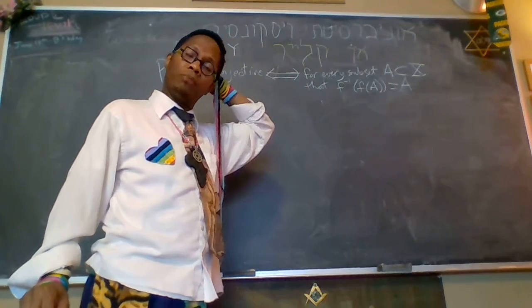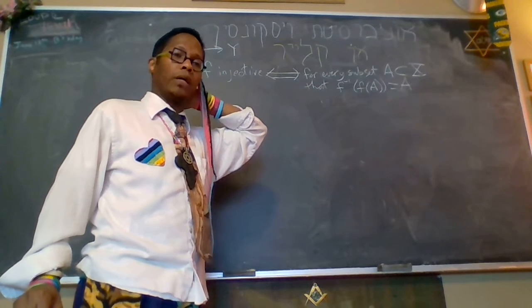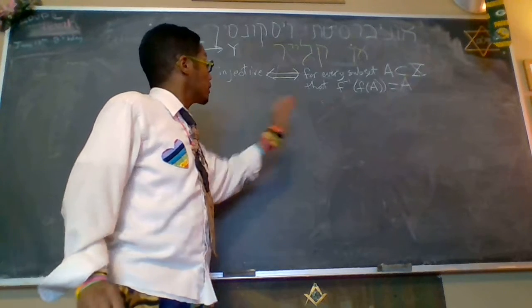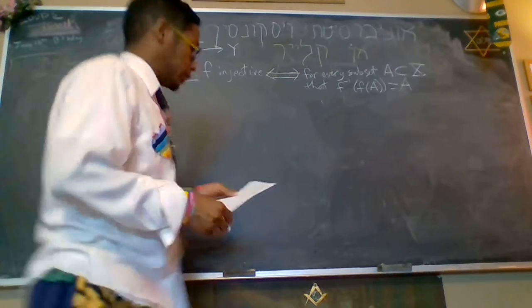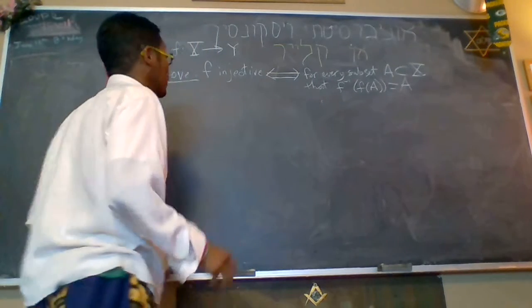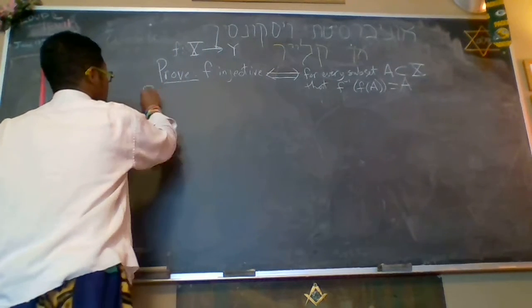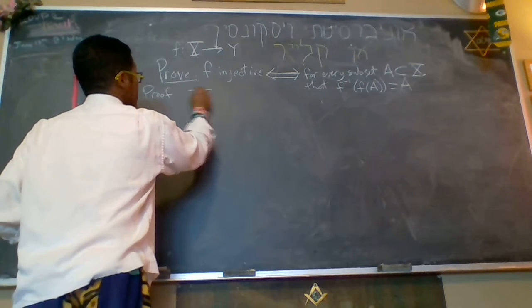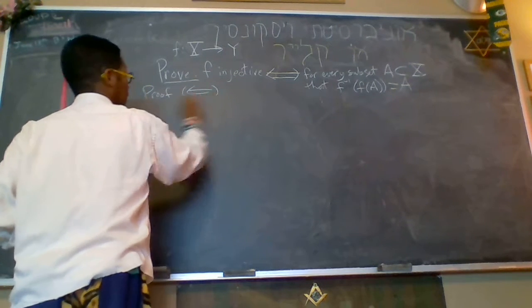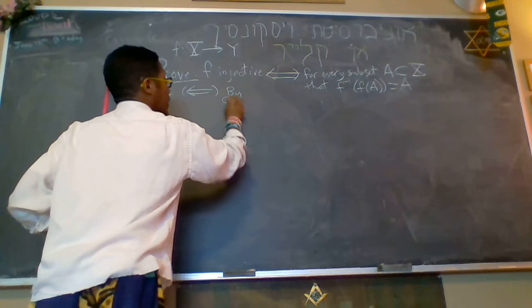First, I'll do a proof by contrapositive, and then I'll do a proof by direct proof. So to that end, let us do the contrapositive proof first. Proof of this direction by contrapositive proof.